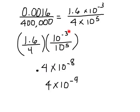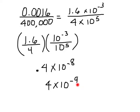And 10 to the negative 3rd and 10 to the 5th — remember this 5 is going to come up and be negative 5, so that's going to be negative 8. But I'm going to have to move this decimal one place to the right, so that's going to add 1 to this negative 8 — I'll add a negative 1. So I'm going to have 4 times 10 to the negative 9th after I've moved that decimal.